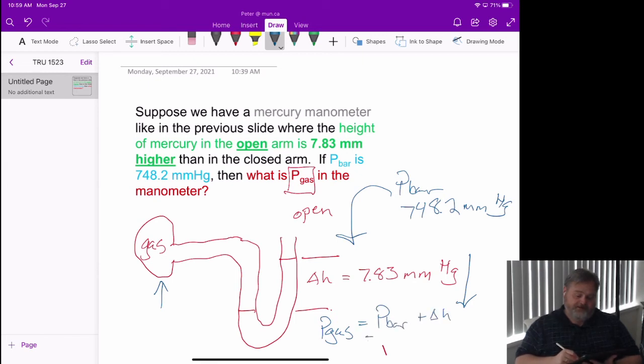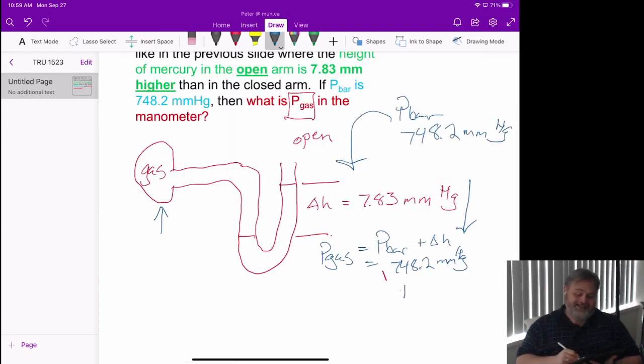So that is going to be our 748.2 millimeters of mercury added to the additional 7.83 millimeters of mercury of weight of extra pressure that's needed to make things balance out.